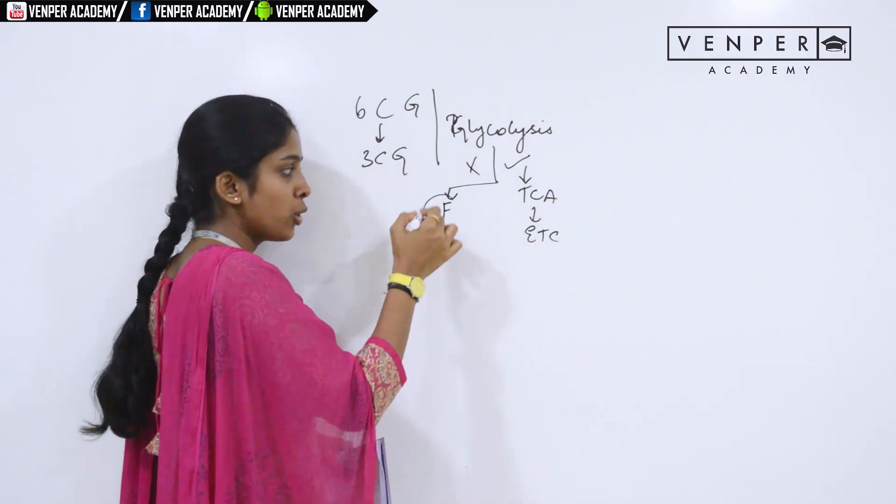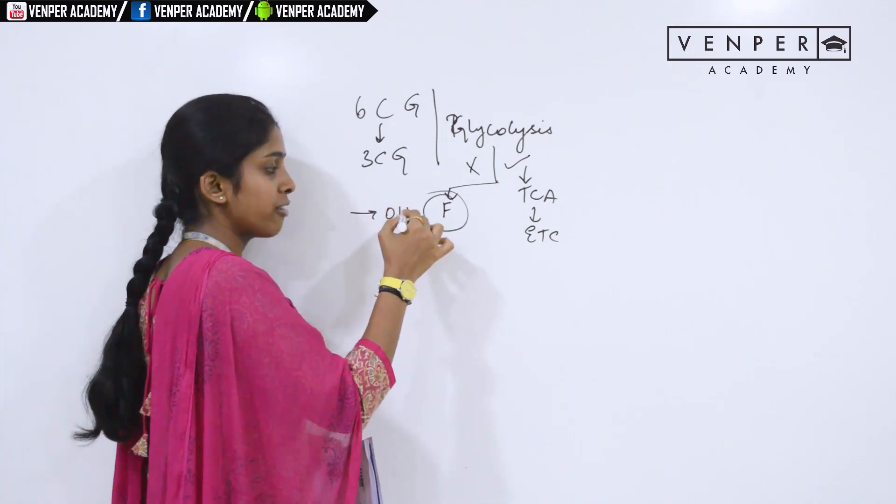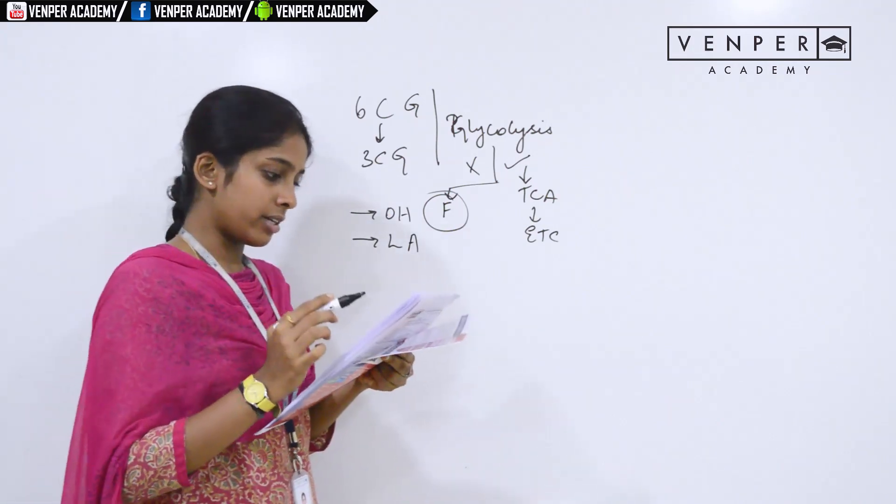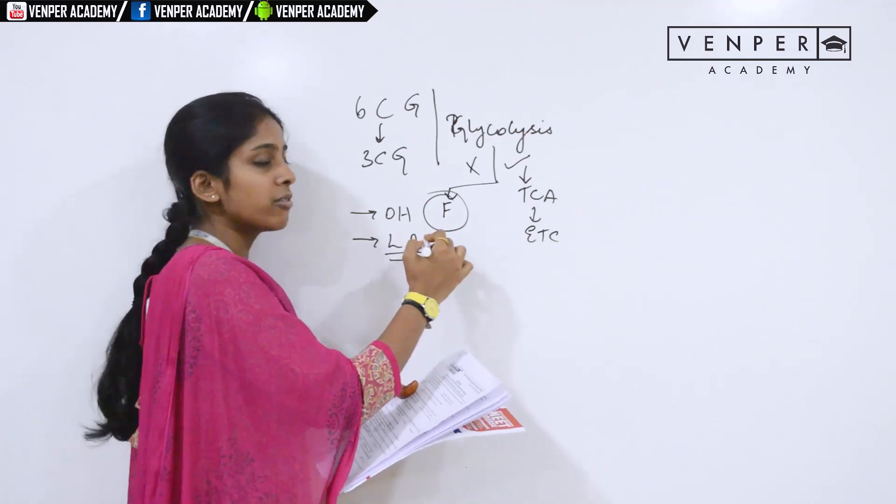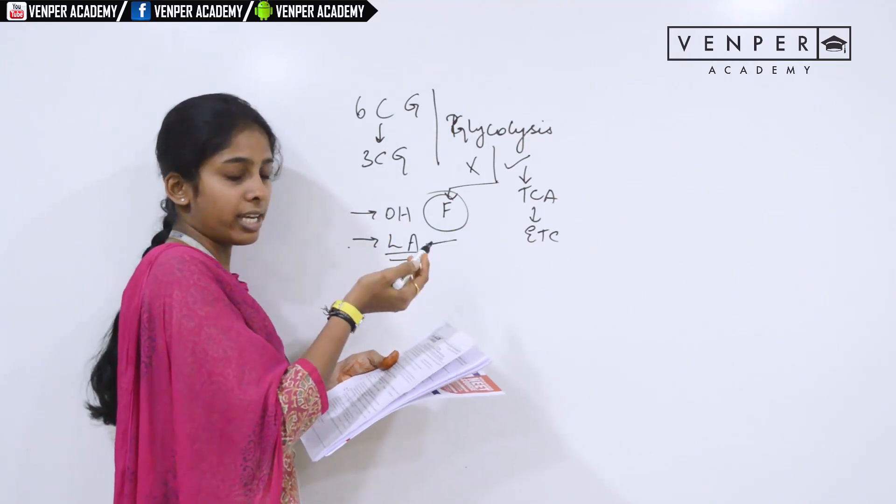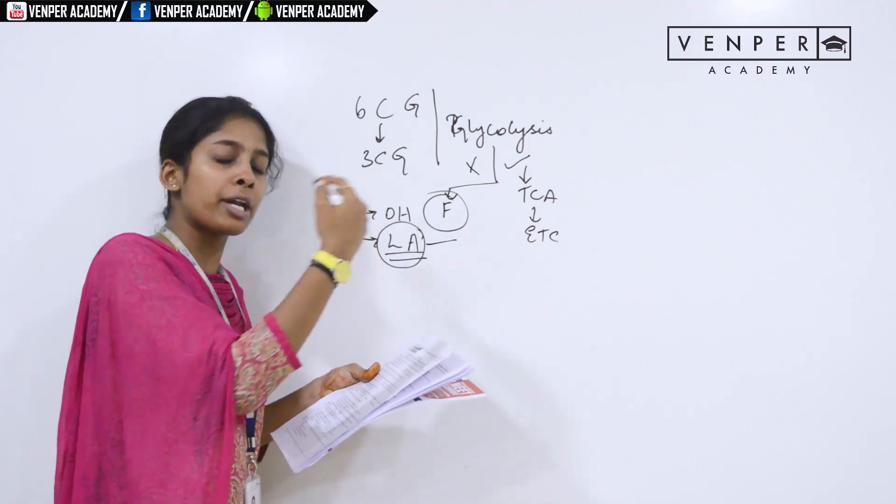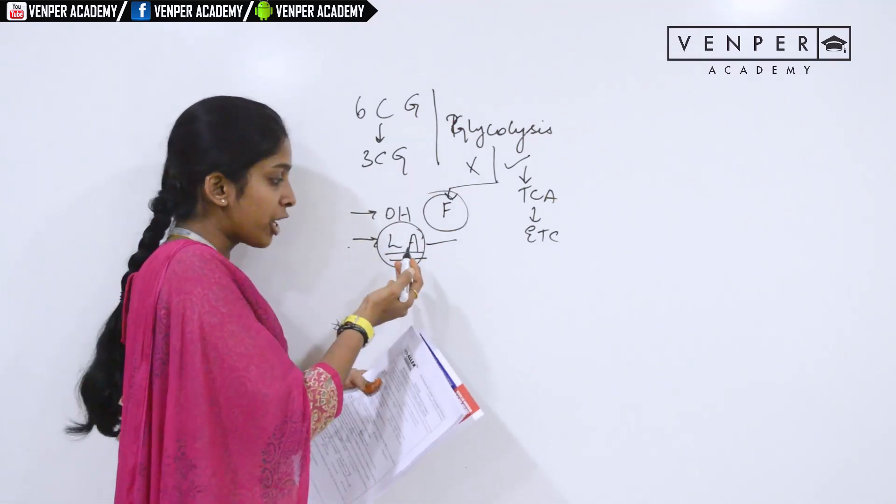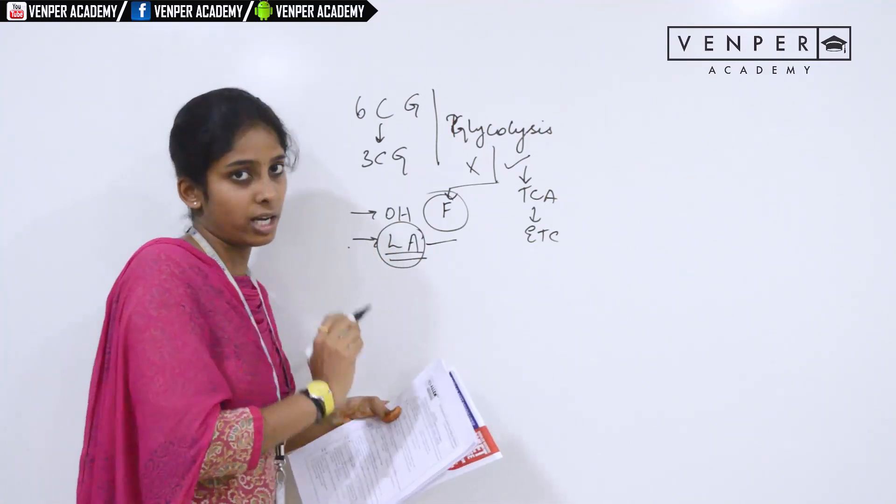In anaerobic conditions, you have fermentation process. Two fermentations: one is alcoholic fermentation, the other one is lactic acid fermentation. The question here is pyruvate and lactic acid. In lactic acid fermentation only, you have the formation of lactic acid. So the answer would be anaerobic condition in muscle cells. When you contract your muscles for a prolonged period, you have the accumulation of lactic acid in muscle cells under anaerobic conditions.